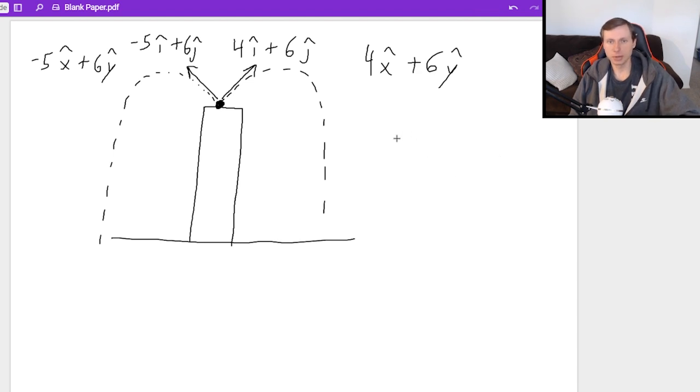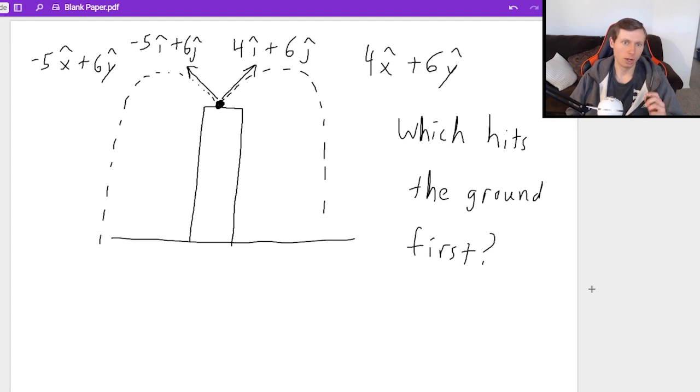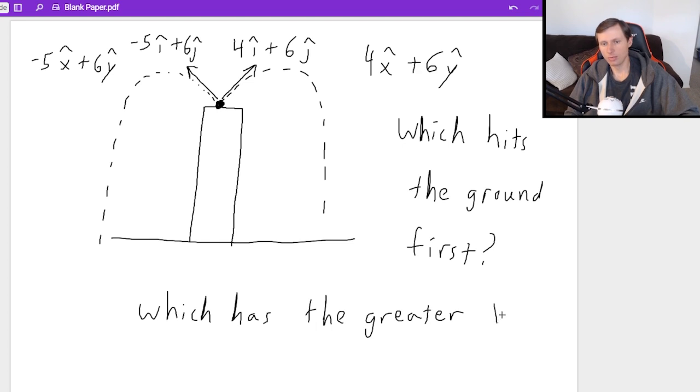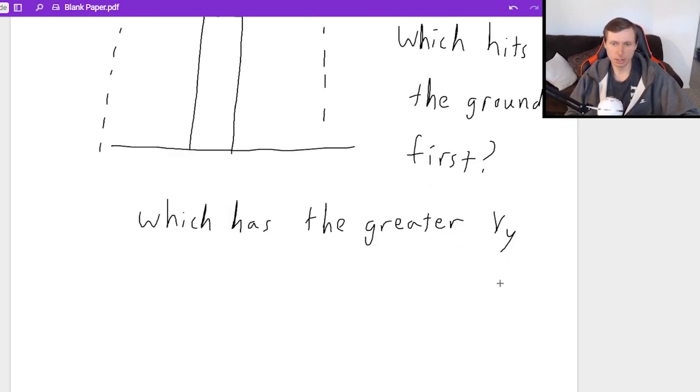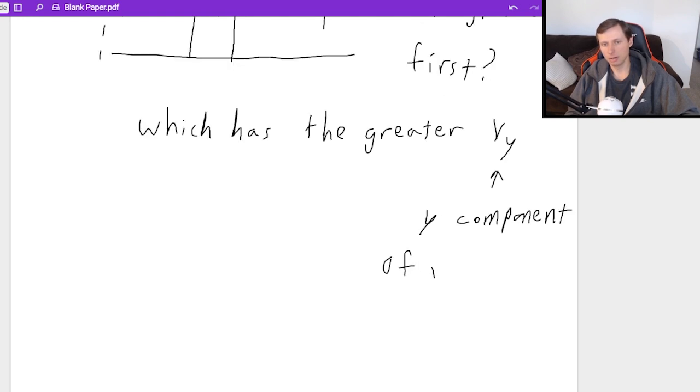And so my question is going to be, which hits the ground first? And this is a really easy question if you know what to look out for. All you need to do to determine which one hits the ground first, you just need to tell me which has the greater v y. In other words, the greater y component of velocity.